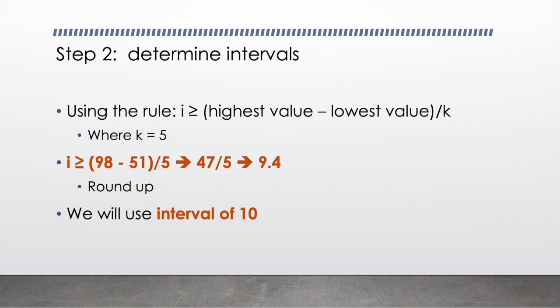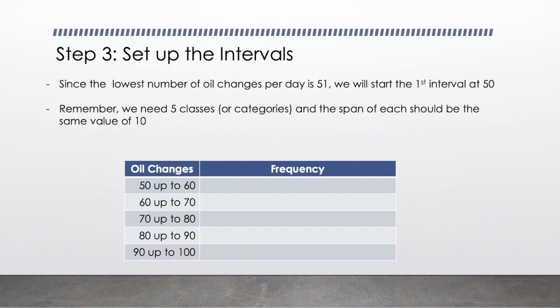Moving on to step 3. Now we're going to set up the intervals so we can finalize our frequency table. Since the lowest number of oil changes in a day was 51, we're going to start our first interval at 50. It's very important when you're constructing these tables to realize you don't have to start at a value of 0 because that's not relevant to the data set. You want to make sure your information is displayed in a way that has meaning.